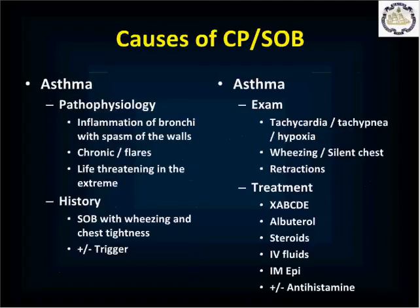Asthma is a disease where the bronchi — the air tubes from the mouth down into the lungs — become inflamed and the walls go into spasm. It's a chronic disease; some patients require daily medication, others only when sick, and in the extreme it can be life-threatening. A patient with an asthma attack will complain of shortness of breath, audible wheezing, and chest tightness. There is often a trigger such as an environmental allergy, a cold, a viral upper respiratory infection, or some other exposure.